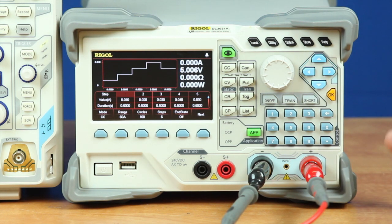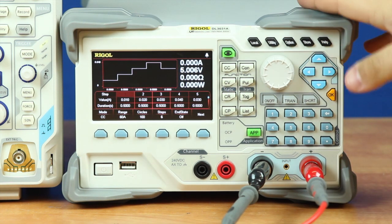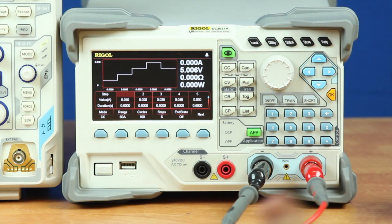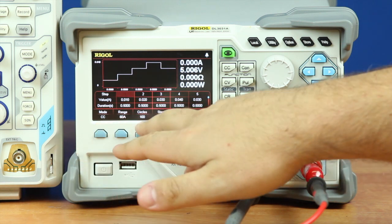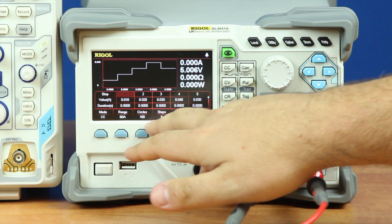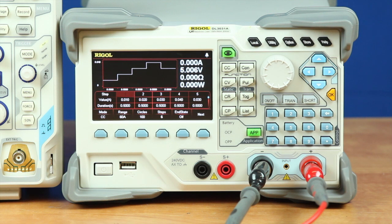Now that our leads are moved over, I've already pre-programmed our load in the list function to give us our six steps at different thresholds. I'll walk through what I did. Basically, I put it in constant current mode, set the number of cycles to 100, and then created six steps because there's six steps in the current draw from the IoT board.